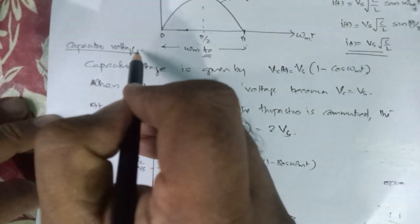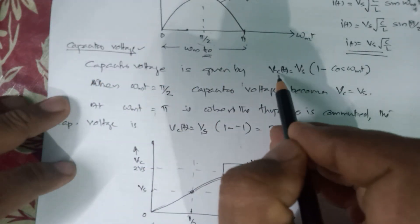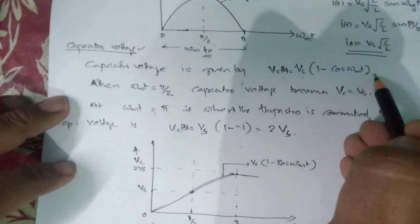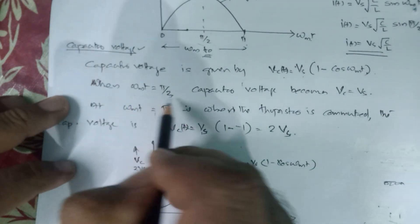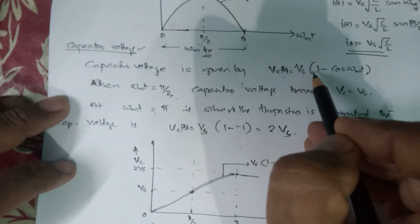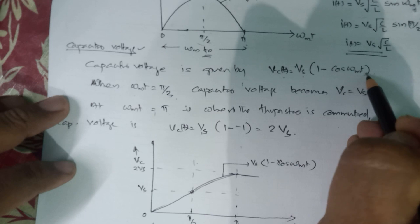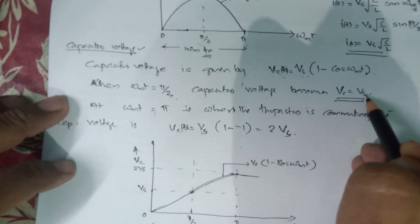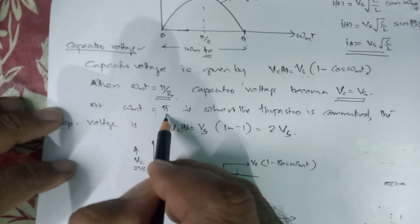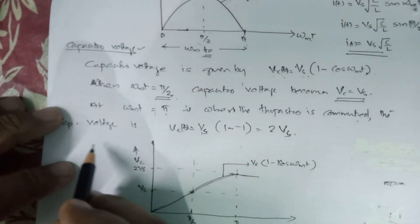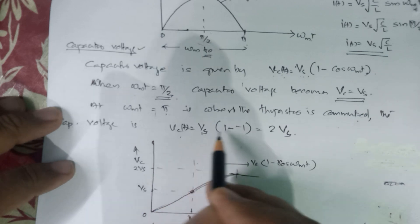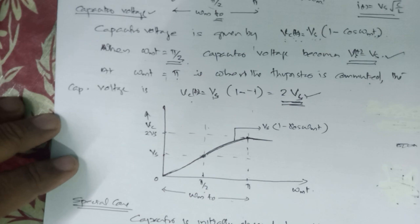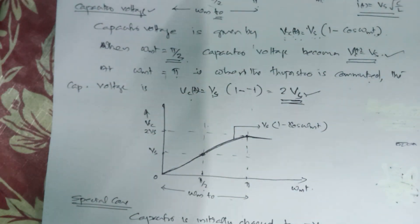The capacitor voltage is given by Vc(t) equals Vs·(1 − cos(ωm·t)). When ωm·t equals π/2, this becomes Vs·(1 − cos(π/2)). Since cos(π/2) is 0, Vc(t) equals Vs — the capacitor voltage equals the source voltage. When ωm·t equals π, that is when the thyristor is commuted, the voltage is Vc(t) equals Vs·(1 − (−1)) equals 2Vs. This is the case when the capacitor voltage is initially 0.